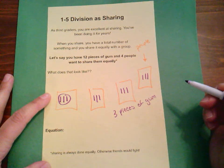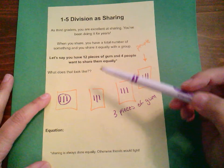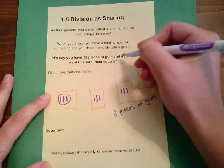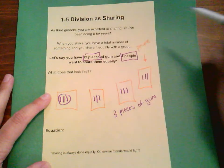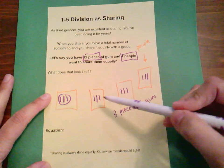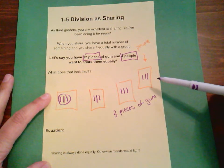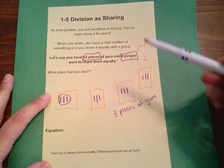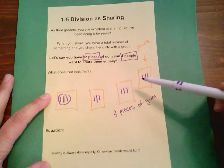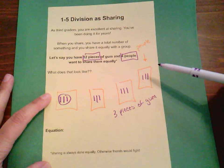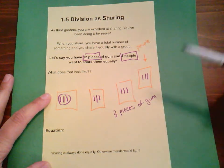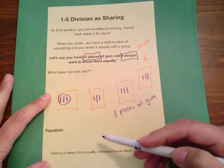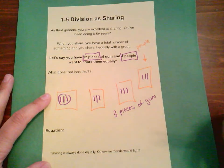I'll pause here for a moment for you to catch up and review what we have. We had four people sharing 12 pieces of gum. I drew four boxes to represent my four people, and then I counted out giving each person one piece of gum until I distributed all those 12 pieces. So now let's talk about what that looks like as an equation.